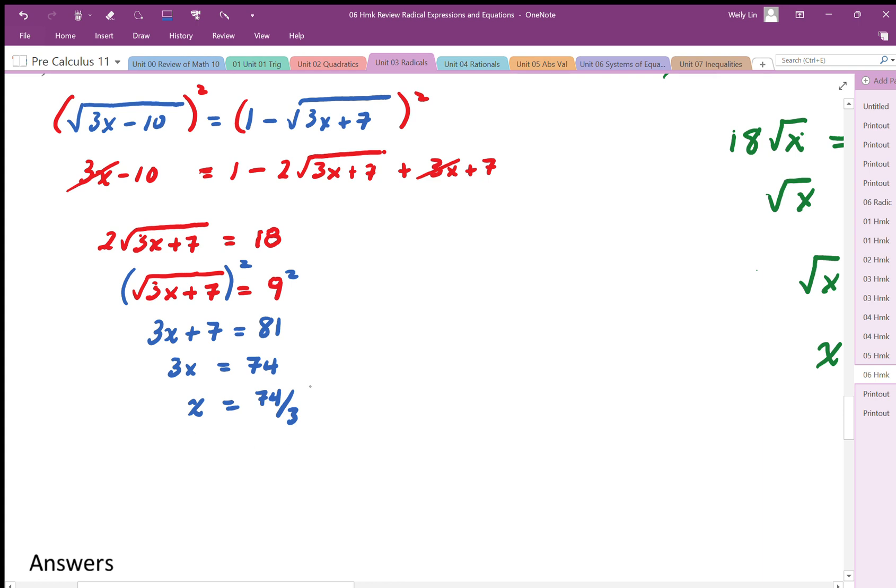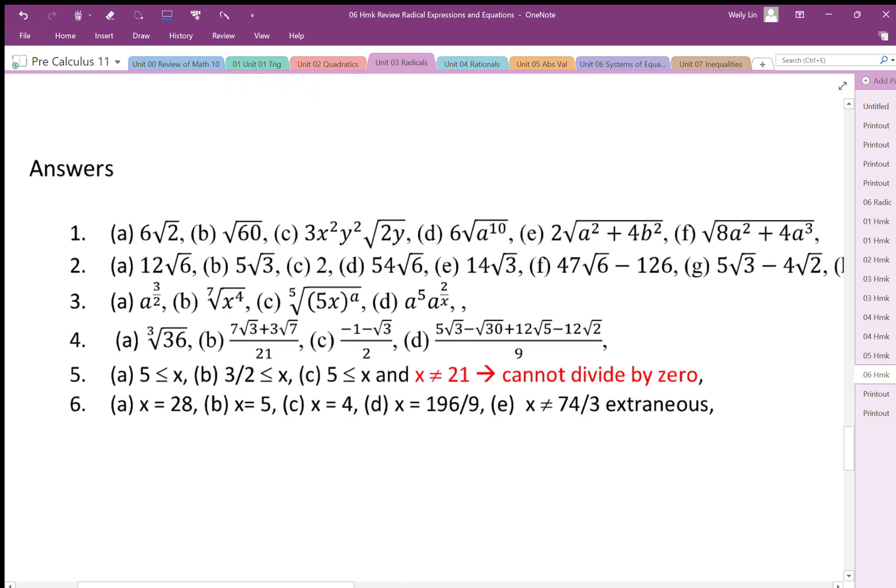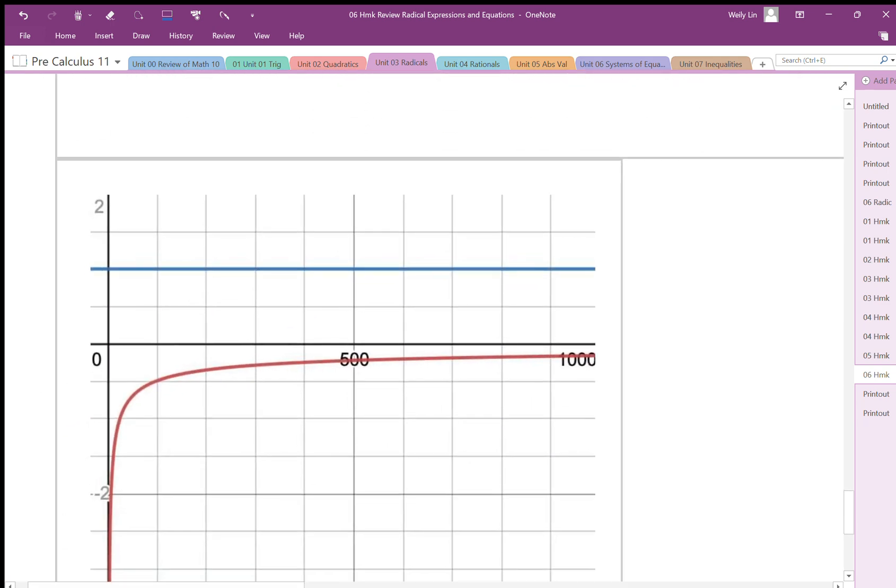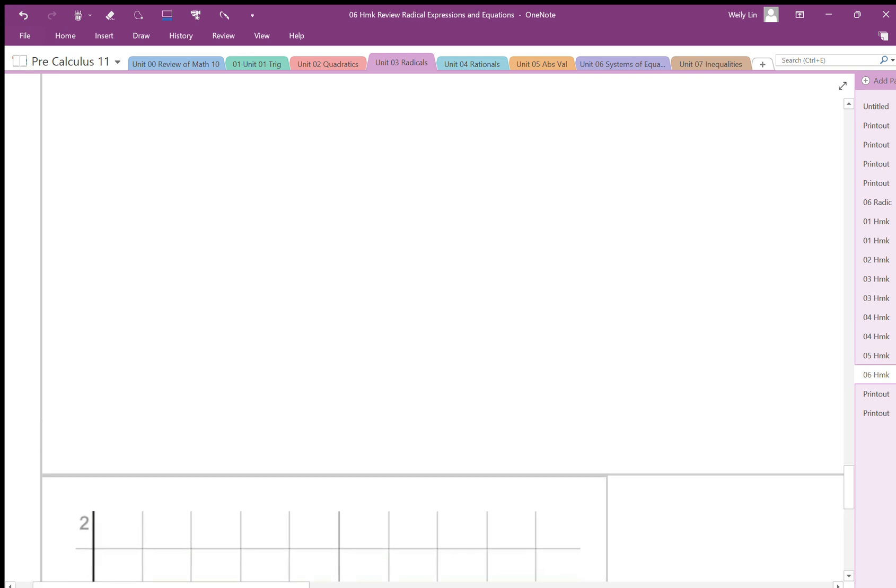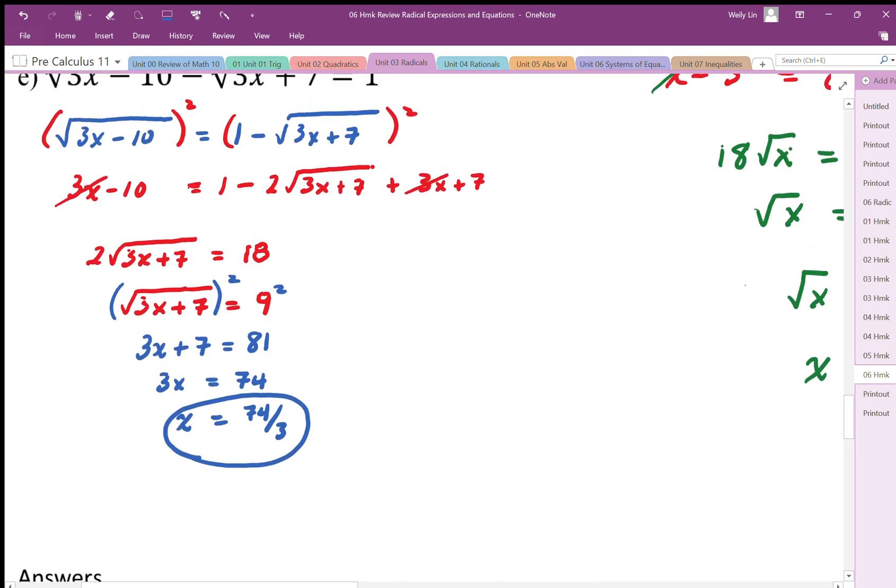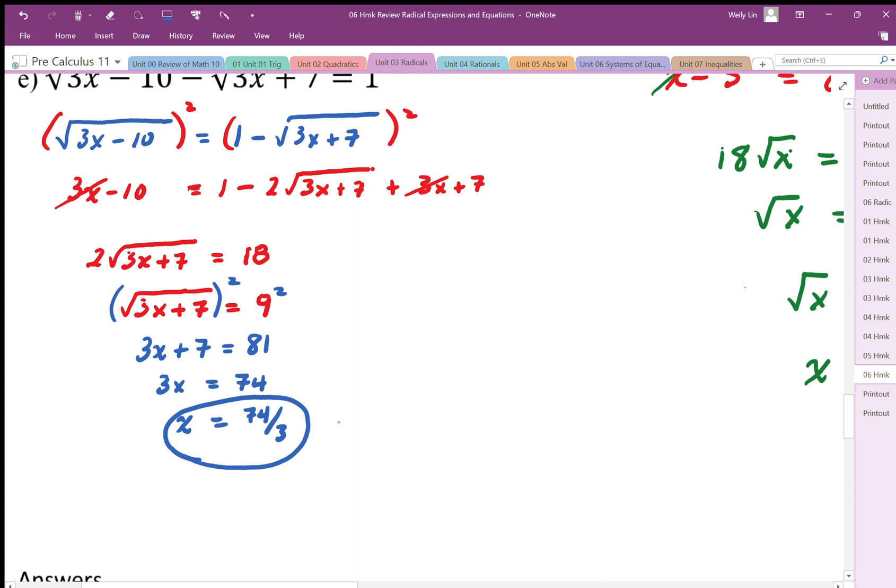So there's my solution. However, looking at the graph, this is extraneous because we have no solution here when y equals 1 on one side, and y equals the double square root on the left hand side, they do not intersect. So this solution is extraneous. And we could also test this solution by plugging it back in. But in the end, this is extraneous.